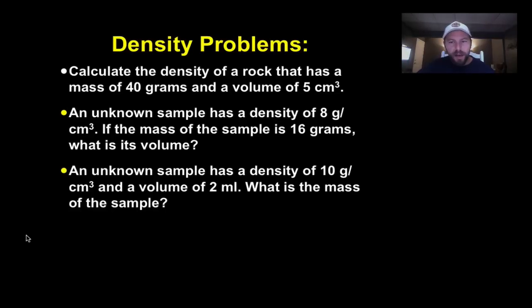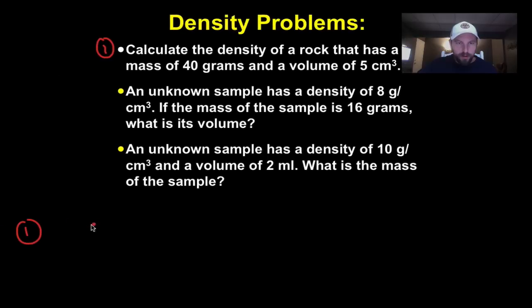So, first thing, calculate the density of a rock that has a mass of 40 grams and a volume of 5 centimeters cubed. Well, we always start. So, for the first one up here, this is number 1. Number 1, density equals mass over volume. So, we know our mass, 40 grams, says it, right there.